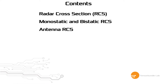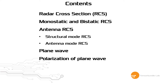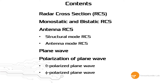Antenna RCS is a bit different from normal RCS. I'll talk about the structural mode antenna RCS, and then antenna mode RCS, and after that I'll talk about the plane wave, which is the thing that we use in order to measure RCS. Then I'll talk about the polarization of plane wave, which is very important. Without the concept of polarization, we cannot understand RCS properly. Then I'll talk about the theta polarized and phi polarized plane wave.